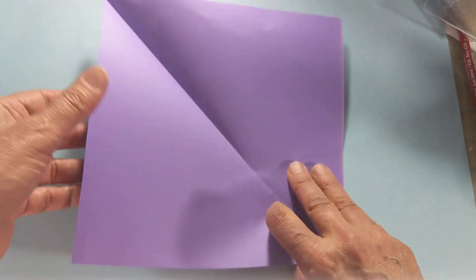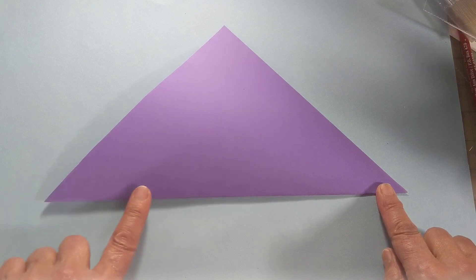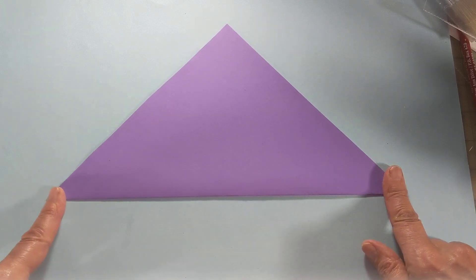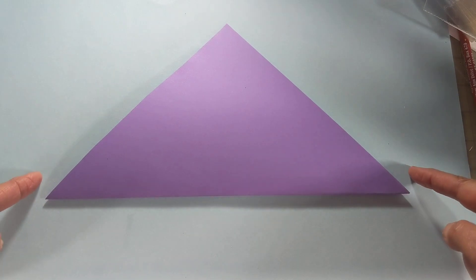You take the square now, fold it in half, you've got a triangle. It's not just a triangle though, it's an isosceles triangle because it's got two equal sides.